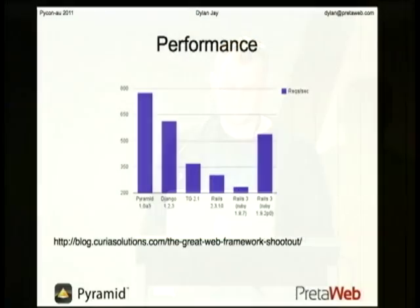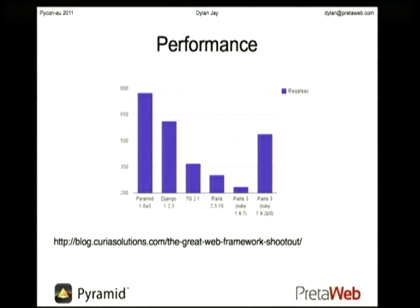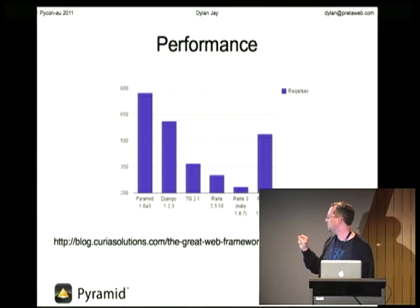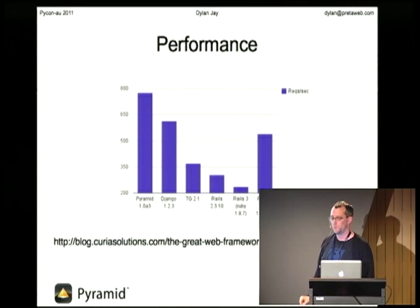There are different uses for all aspects of that spectrum. There have been a few things done on performance. This particular one compares a very simple app — I think it uses a database call, the same database call for each of them.